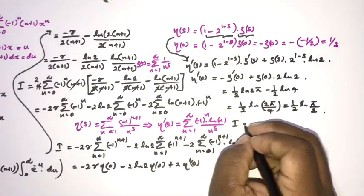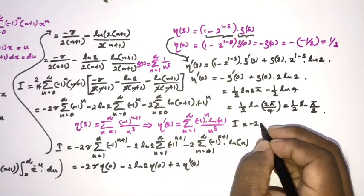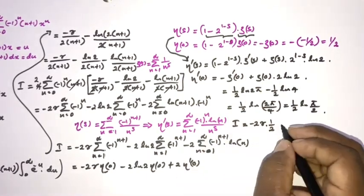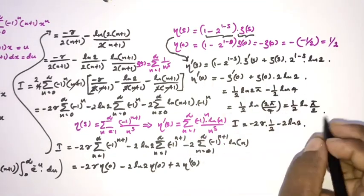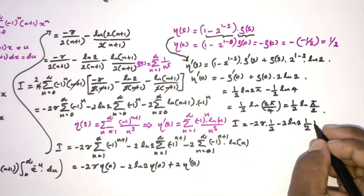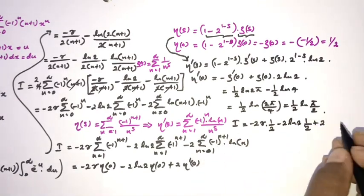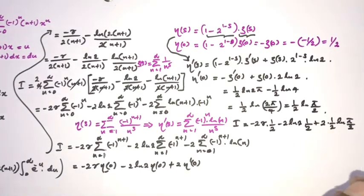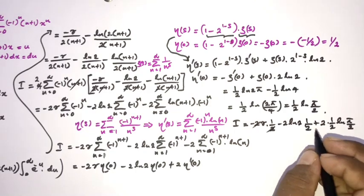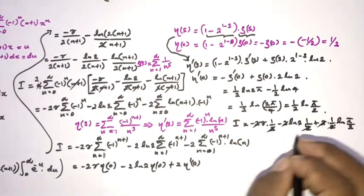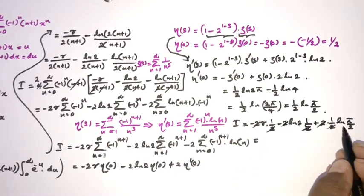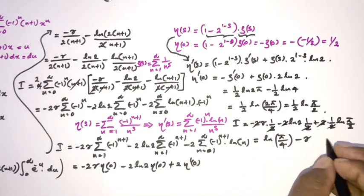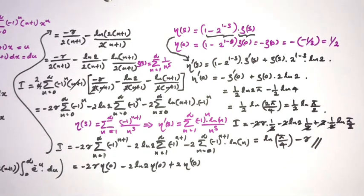Plugging everything in: I = −2γ · (1/2) − 2ln2 · (1/2) + 2 · (1/2)ln(π/2). The factors of 2 cancel throughout, giving I = −γ − ln2 + ln(π/2) = ln(π/4) − γ. This is the final answer for this integral. Thank you for watching.